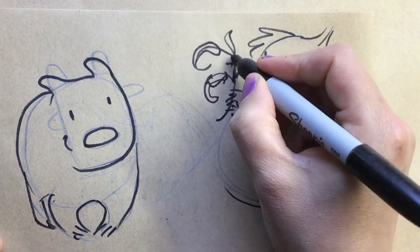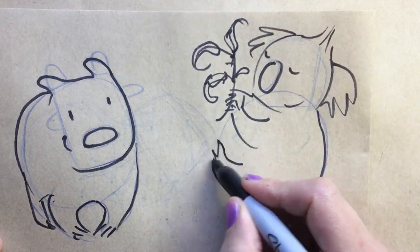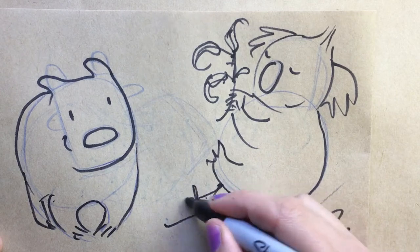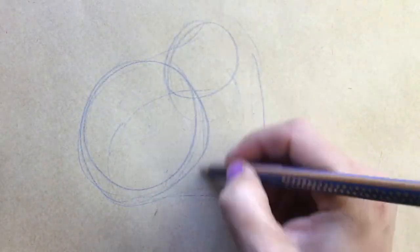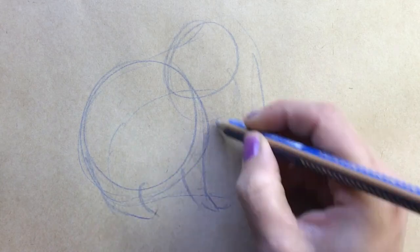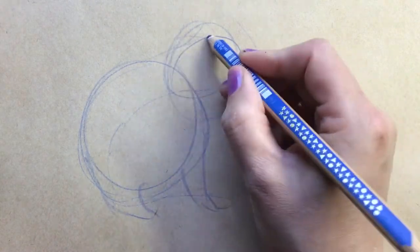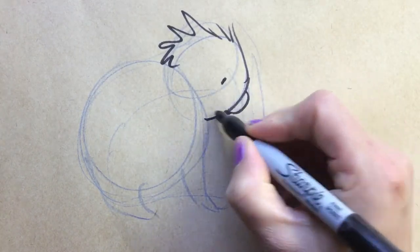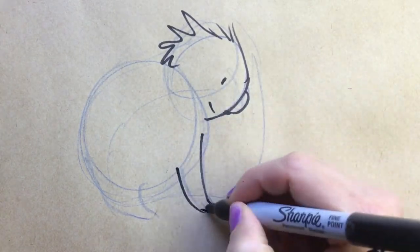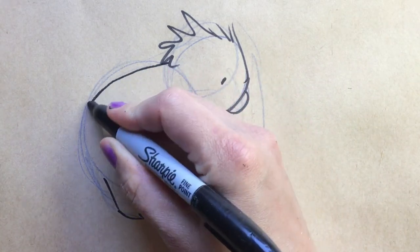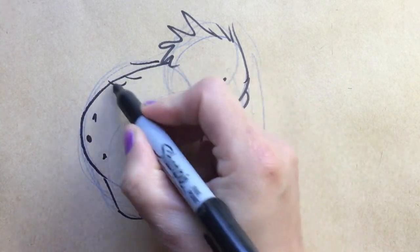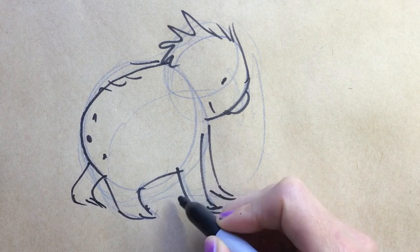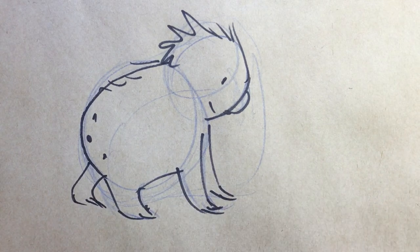Koalas have got the big backside and the curvy legs again. To draw a koala or a wombat from the side, you do some big circles. You've got the ears and just a hint of their nose, and then you've got these really curvy legs. Koalas have got dots on their backsides.